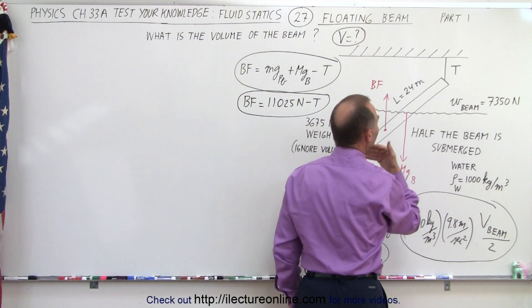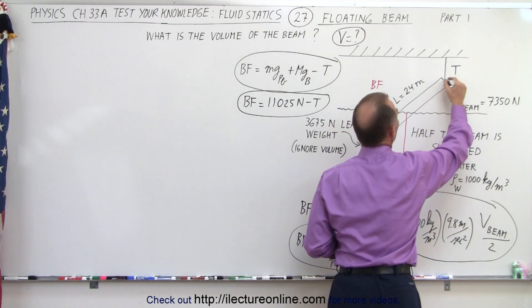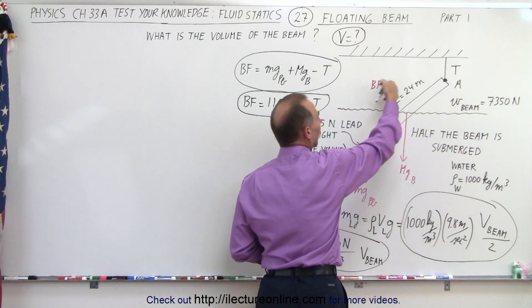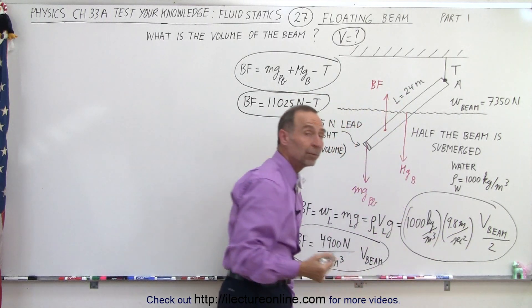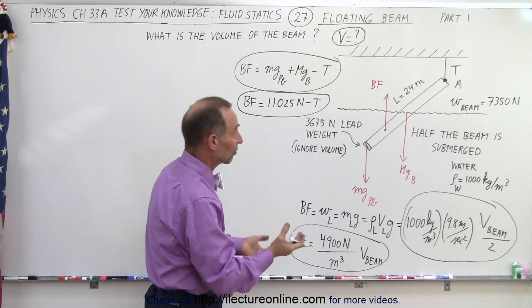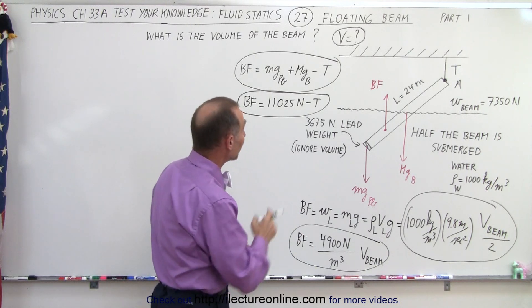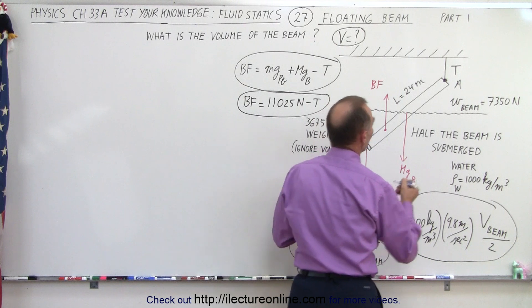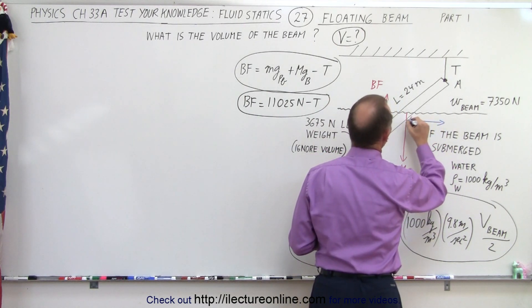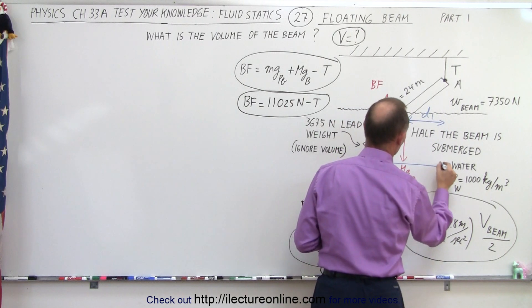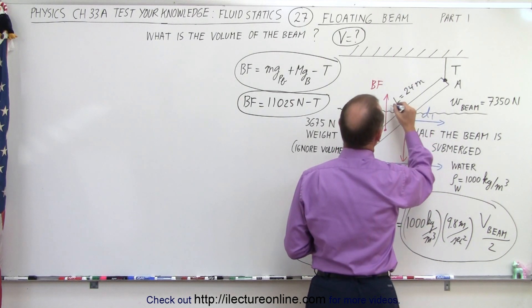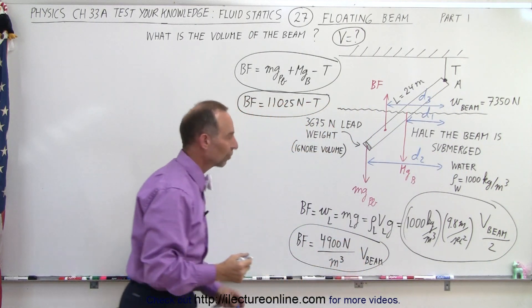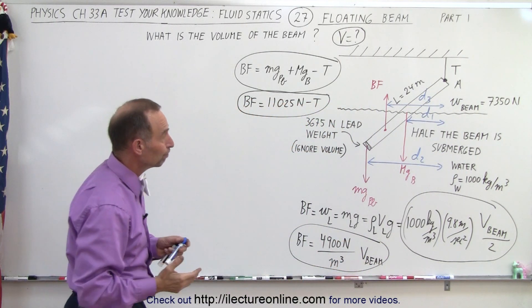What we could do is use torques. If we find the torque about point A, then the only three forces we care about are the weight of the lead, the weight of the beam, and the buoyancy force. Setting the sum of the torques equal to zero will give us an equation only in terms of the volume of the beam, which is what we're after. We need to find the distances: distance one to the first force, distance two to the second force, and distance three to the buoyancy force.